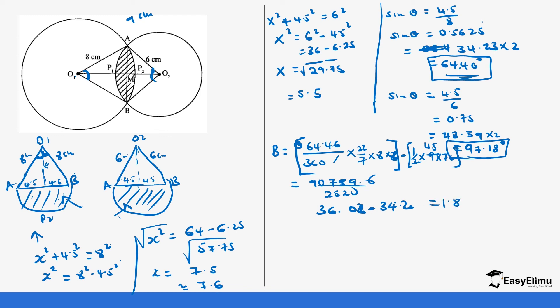4.5 times 7.6 gives us 34.2. So we are doing 36.02 minus 34.2, which gives us 1.82 centimeters squared. This is the area of the big sector segment.